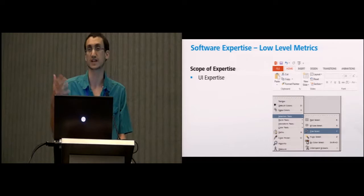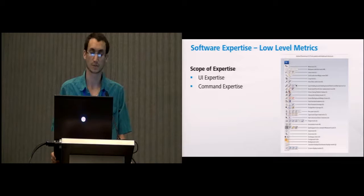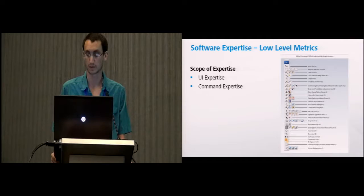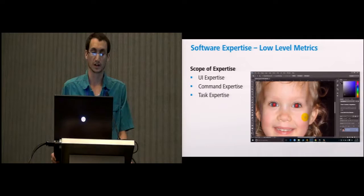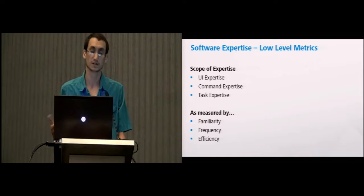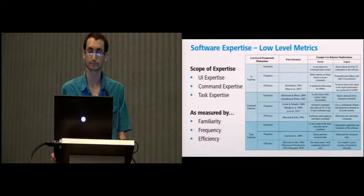With UI expertise, we look at the ability to navigate the user interface regardless of commands or task flows. With command expertise, we look at the scope of all the commands or tools, individual components that one might use. With task expertise, we're looking at users' capabilities to complete higher-level tasks. For all these metrics of expertise, you can measure them by a user's familiarity, their frequency, or their efficiency at any of these levels of scope.